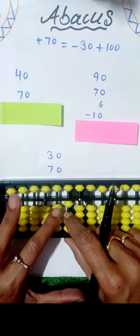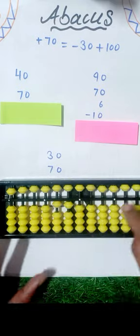Remove 30 from here, add 100. This is 100s rod. 1s, 10s and 100s rod.